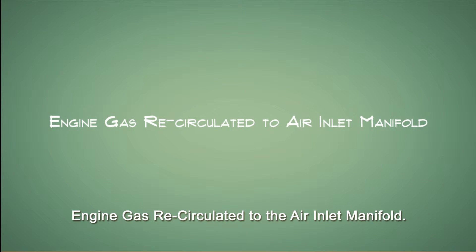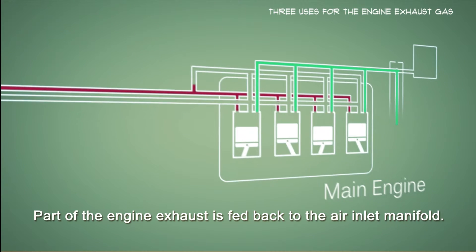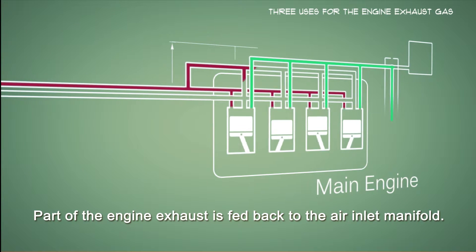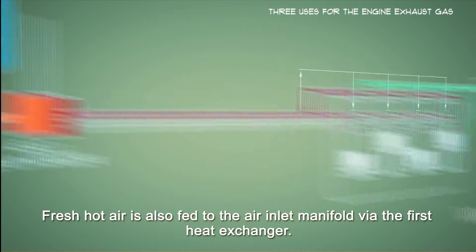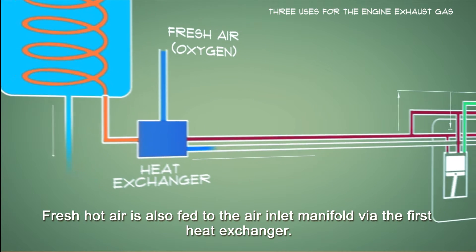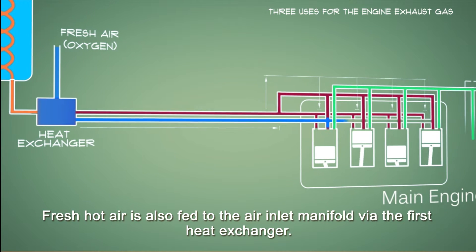Thirdly, engine gas recirculated to the air inlet manifold. Part of the engine exhaust is fed back to the air inlet manifold. Fresh hot air is also fed to the air inlet manifold via the first heat exchanger.